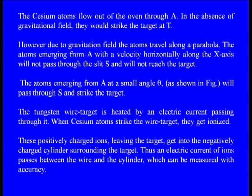In the absence of a gravitational field, the atoms will strike the target at T directly. However, due to the gravitational field, the atoms travel along a parabola — the trajectory of a particle in a gravitational field is a parabola. The atom emerging from A with a horizontal velocity along the x-axis will not pass through slit S and will not reach the target. The atom emerging from A at a small angle theta will pass through S and strike the target.